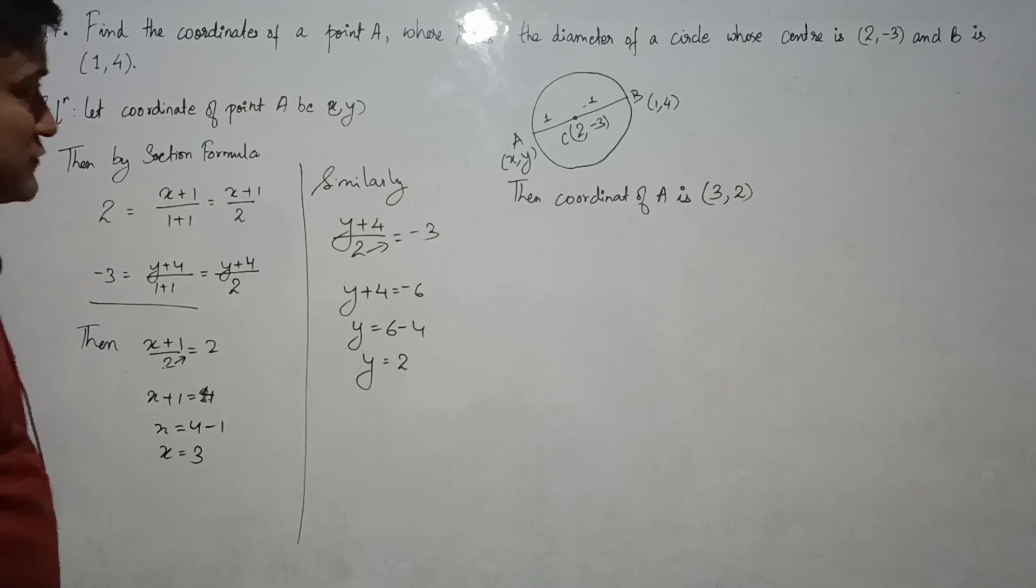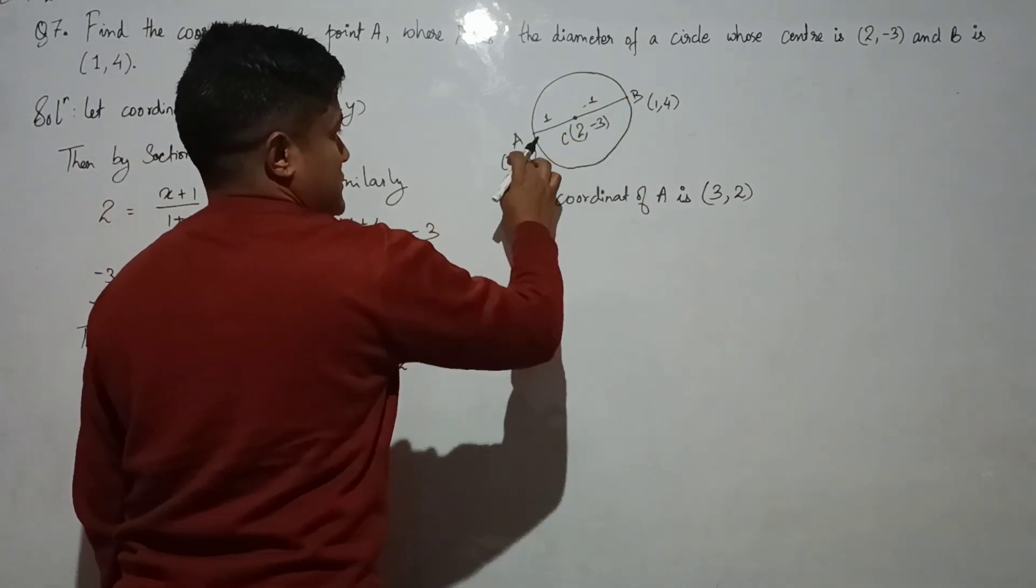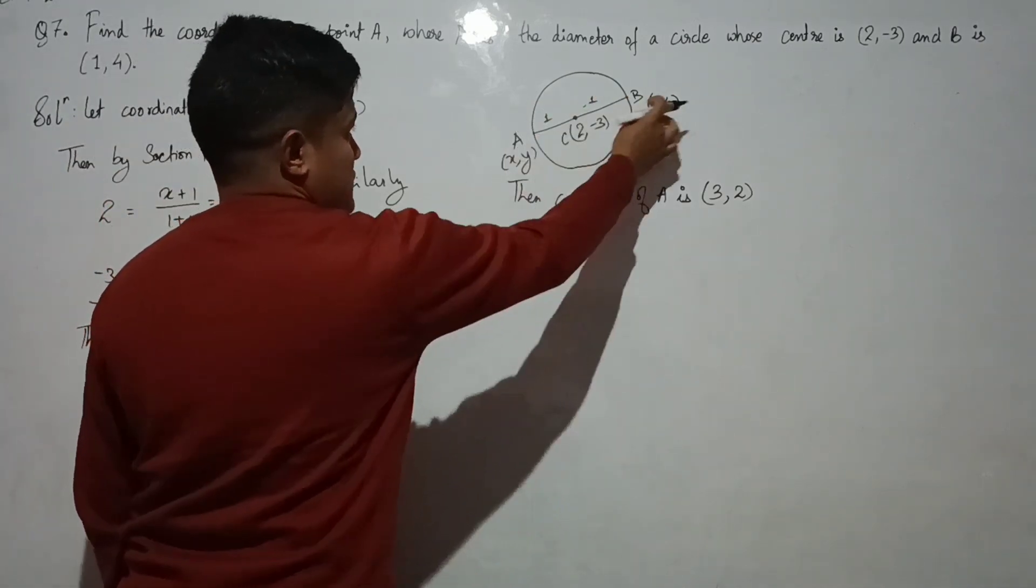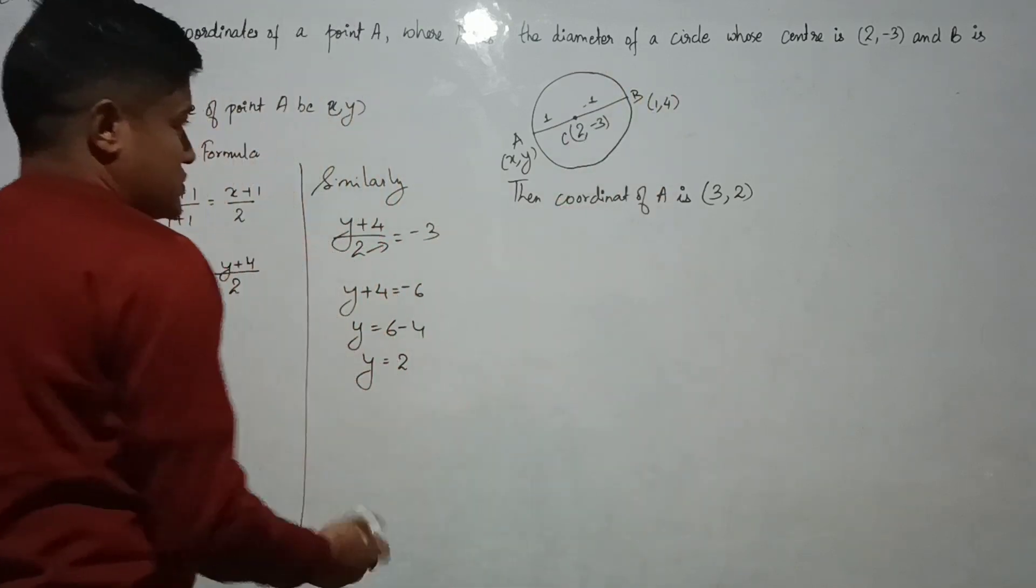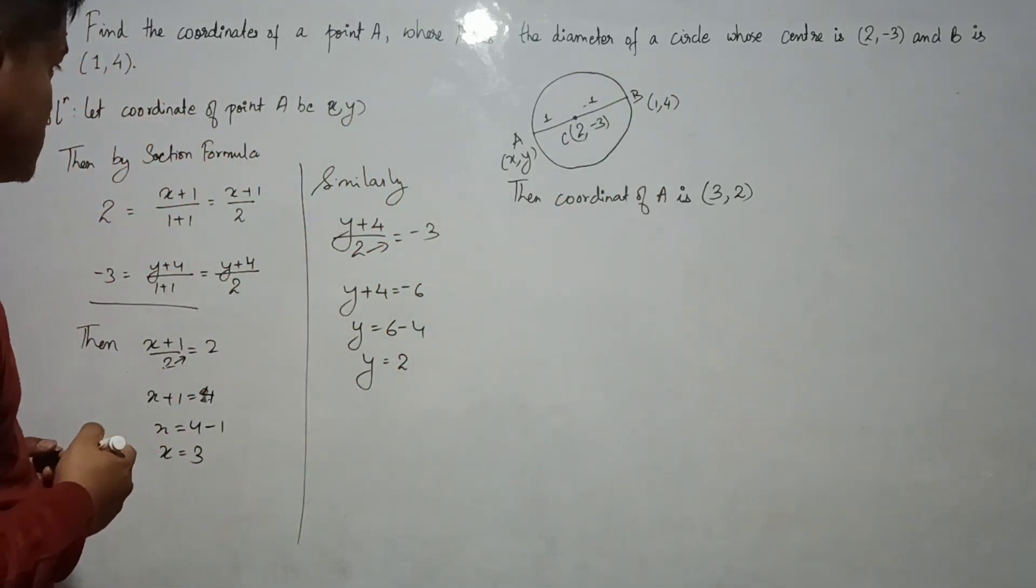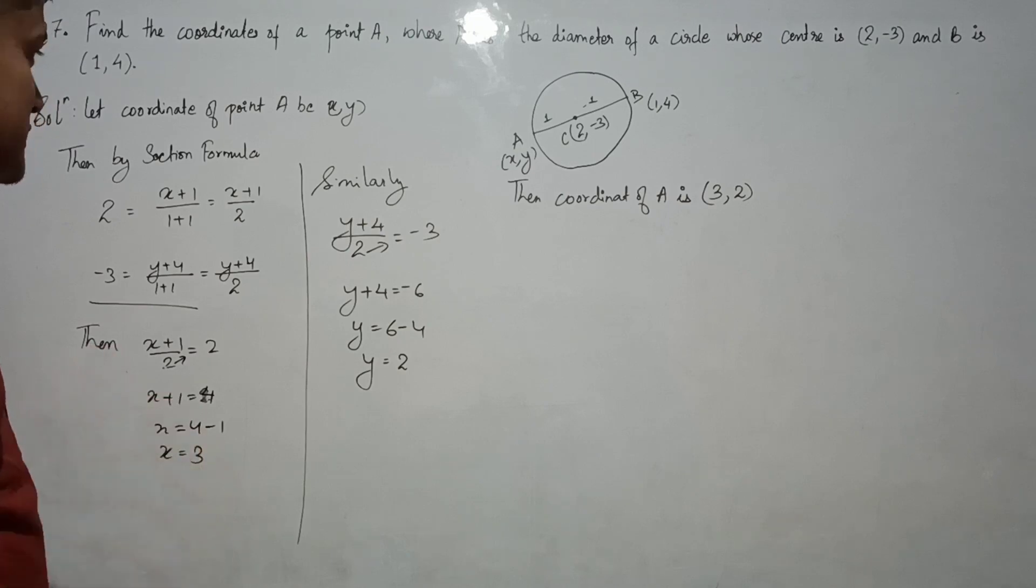When in section formula when ratio is 1 is to 1, directly we can do (X plus 1) by (1 plus 1) equals 2. So when ratio is 1 is to 1, you can do this using this formula.